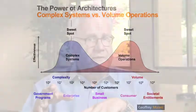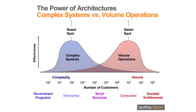When it comes to company power, it's important that you establish your power relative to one of two business architectures. That will determine your competitive set — who you compete against and who you would potentially partner with. The two business architectures are called the complex systems model and the volume operations model.